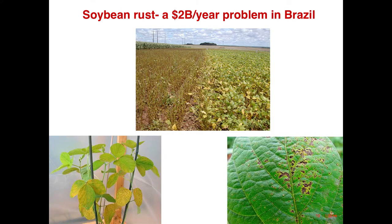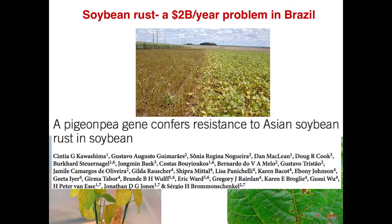Soybean rust — Asian soybean rust, first defined in Japan — has been spreading across the world. About 15 years ago spores blew across the Atlantic into Brazil, and now it's a $2 billion problem on soybeans there, fostered by continuous planting practices. We and colleagues have identified genes in a tropical legume called pigeon pea that confer resistance to Asian soybean rust. If you put that gene from pigeon pea into soybeans, you've got a resistant soybean, potentially avoiding $2 billion worth of fungicide spraying.